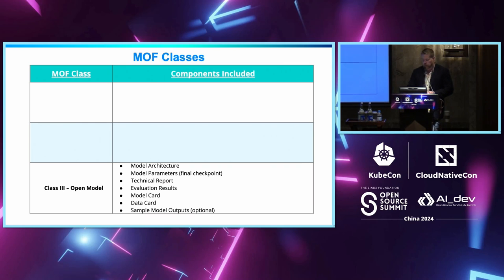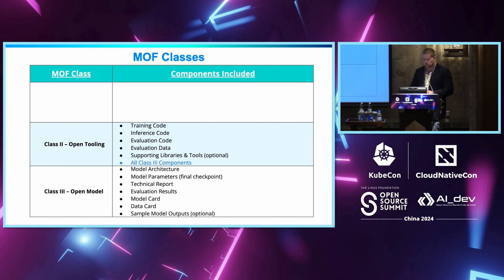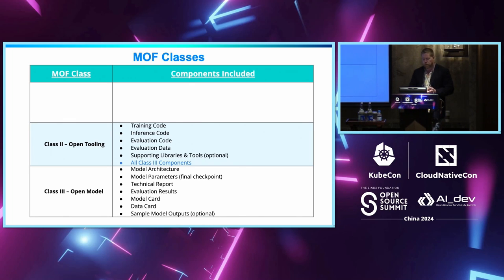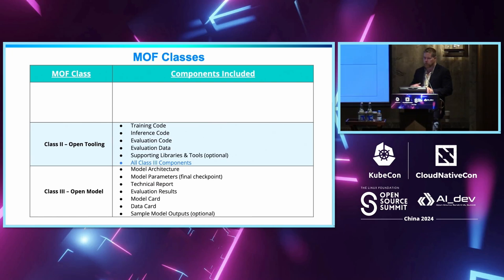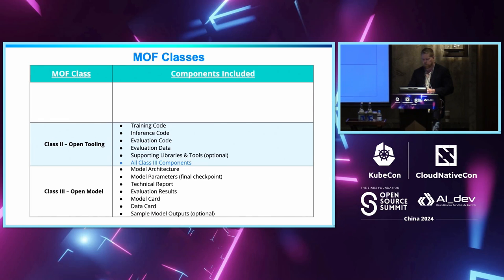Then we have something a bit more, which is the intermediate class — Class 2, open tooling. This is the code supporting training, inference, evaluation, and any evaluation data. This not only allows you to replicate part of the process, but also gives you insight into what hyperparameters were used, how the model was trained, and potentially when data was introduced during the training process. This provides more transparency into the work behind that model.